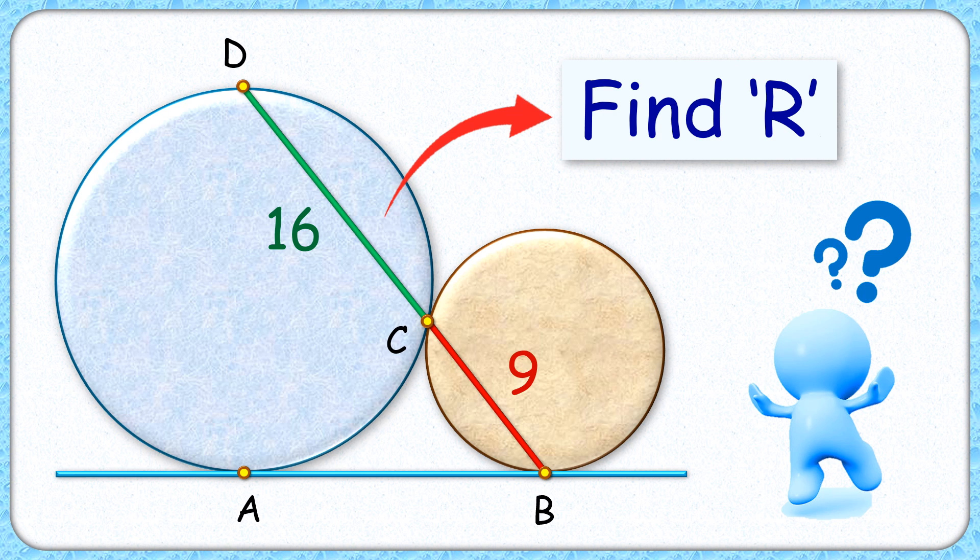In this interesting question, we have two circles touching a line segment at points A and B, and touching each other at point C. A line segment BD is drawn passing through point C. If the length of this red and green line segment is 9 and 16 centimeters, the exciting part is using this limited data we have to find the radius of this bigger circle.